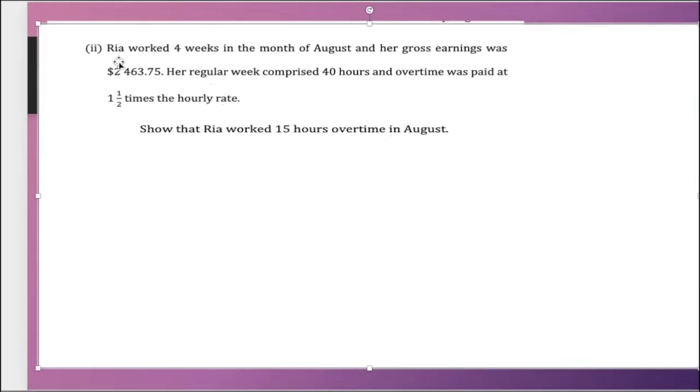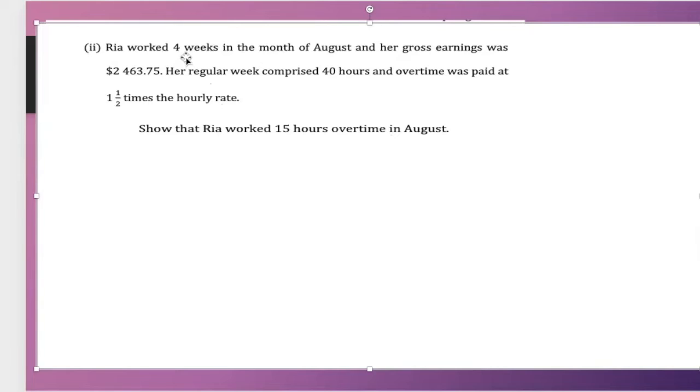The next question states, Ria worked four weeks in the month of August and her gross earnings was $2,463.75. Her regular week comprised of 40 hours and overtime was paid at